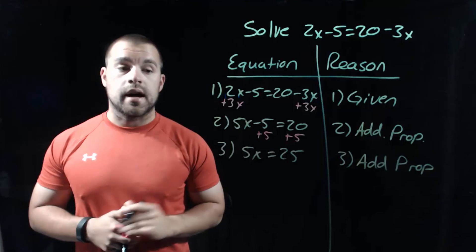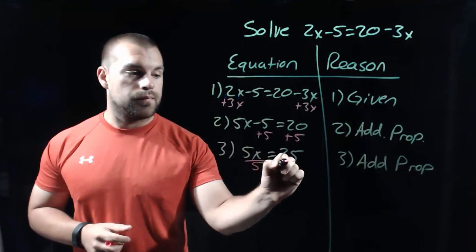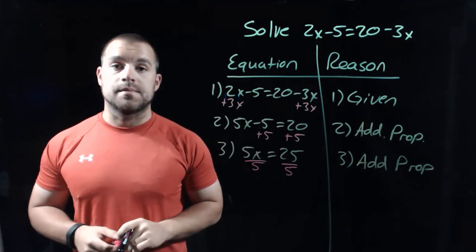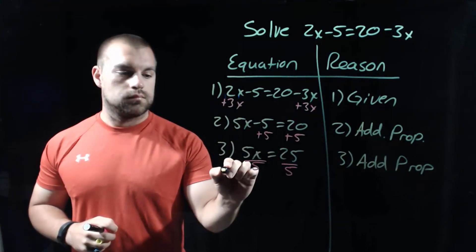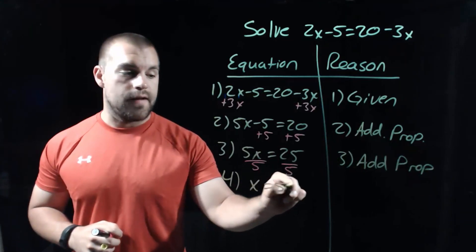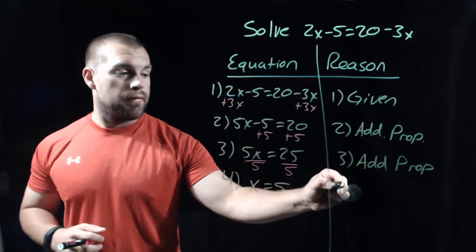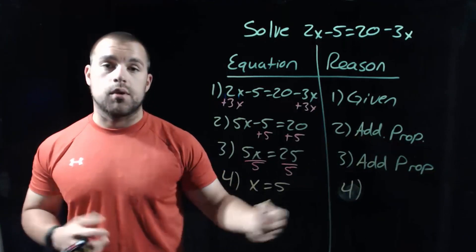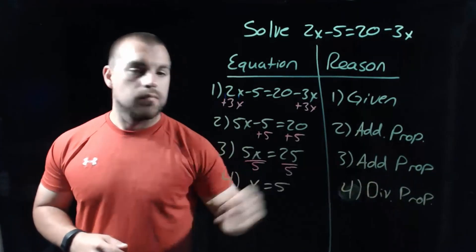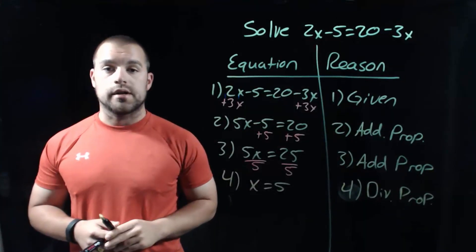The last thing we need to do in order to get x all by itself is get rid of this 5 out in front. So we're going to divide both sides by 5. When we do that, we end up getting x equals 5. And our reason there for number 4 is the division property since we divided on both sides. So that's solving an equation using all of those algebraic properties.